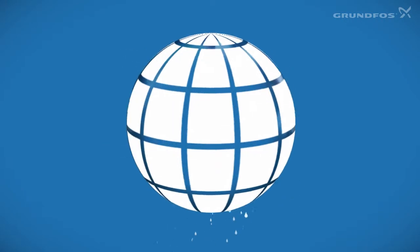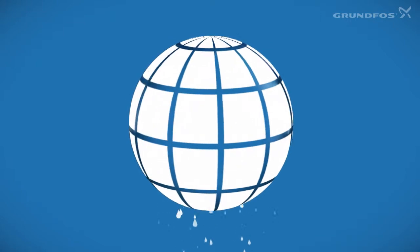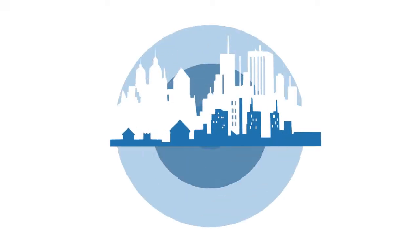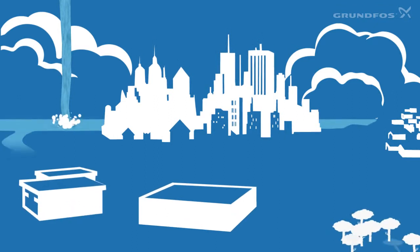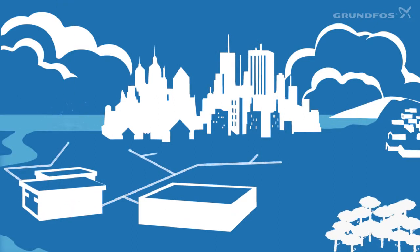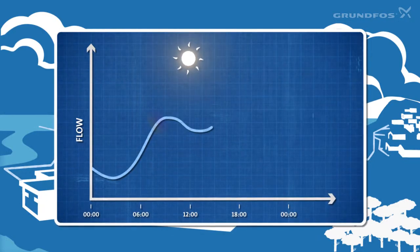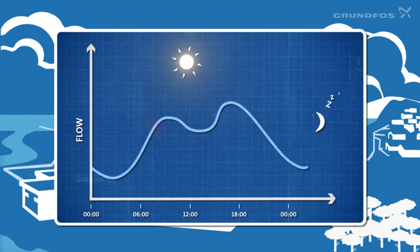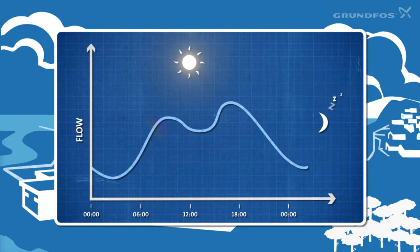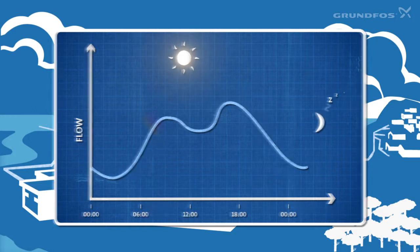Water leakage is a serious problem worldwide. In many cases, water leakage is made worse or caused by constant pressure from the pump. In any municipality, water consumption varies over the course of the day, week, and year. These variations cause a problem with constant pump pressure and they also affect pressure losses in the pipes.